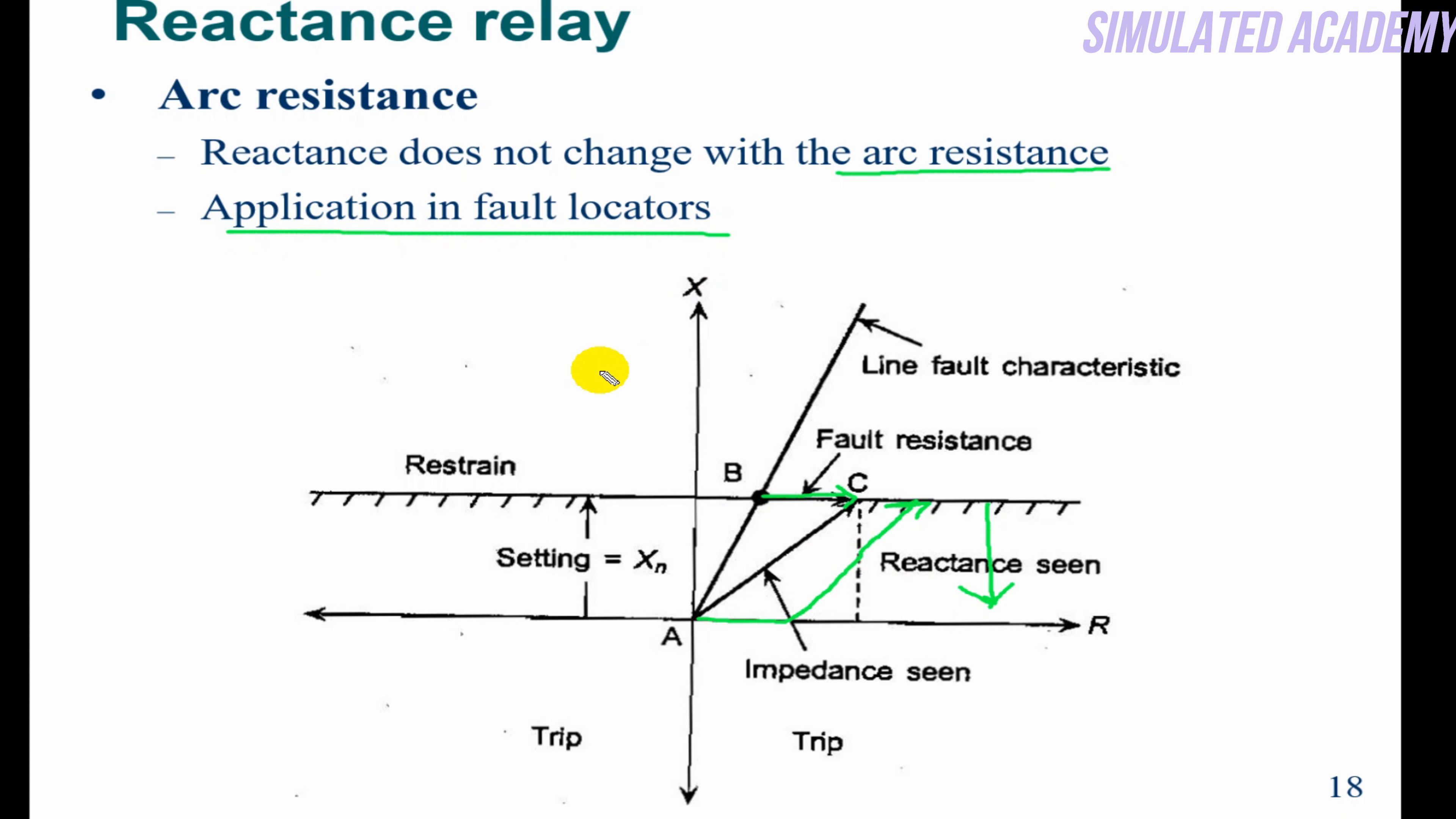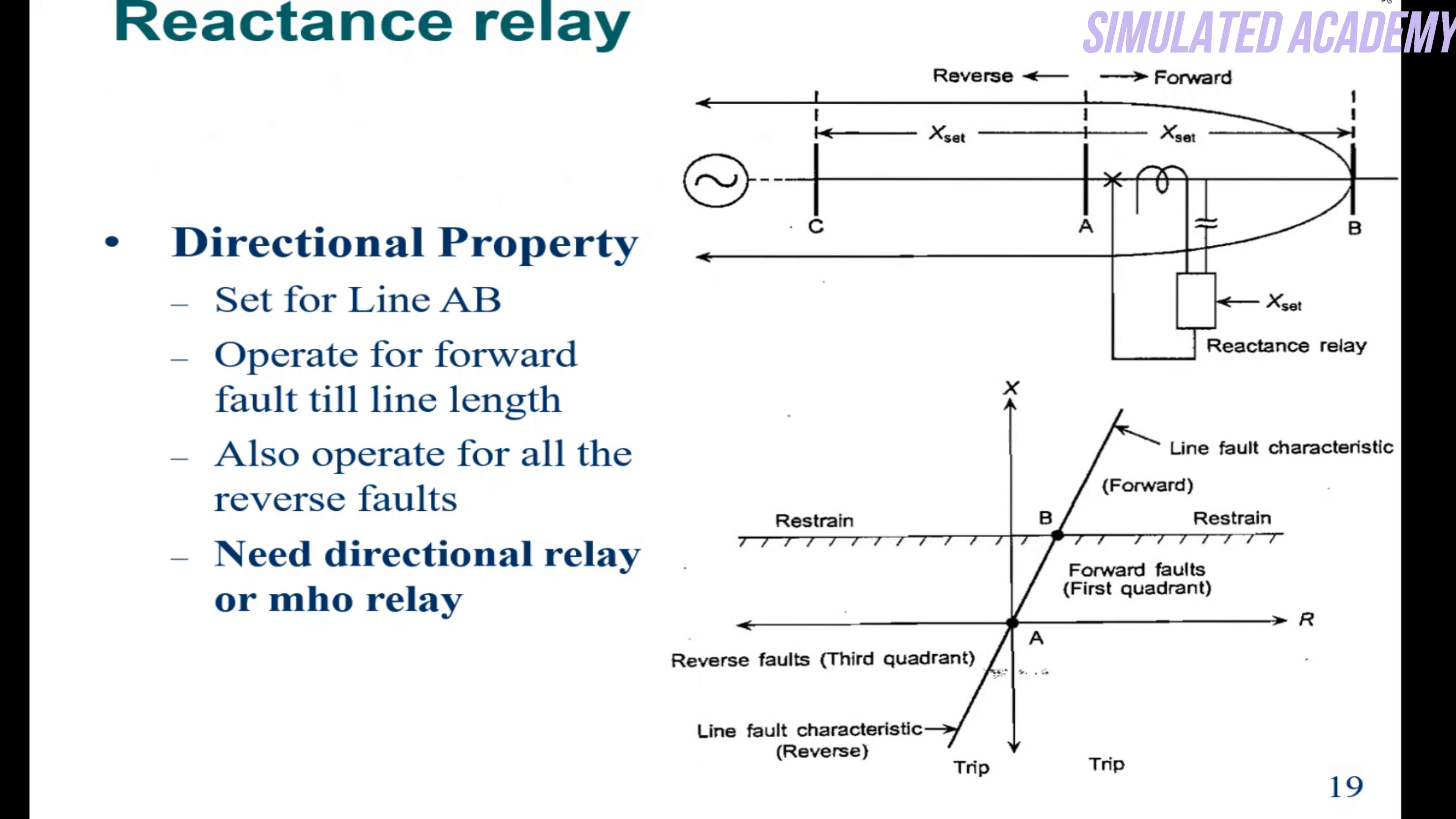If cables are used, you can use this for fault location. There is no directionality in this. If a fault is in any direction—for example, this is forward current, this is reverse current—it will operate for reverse current and also for forward current. So this means there is no directionality. For directionality, some other relay must be used—the mho relay, which we will discuss after this.